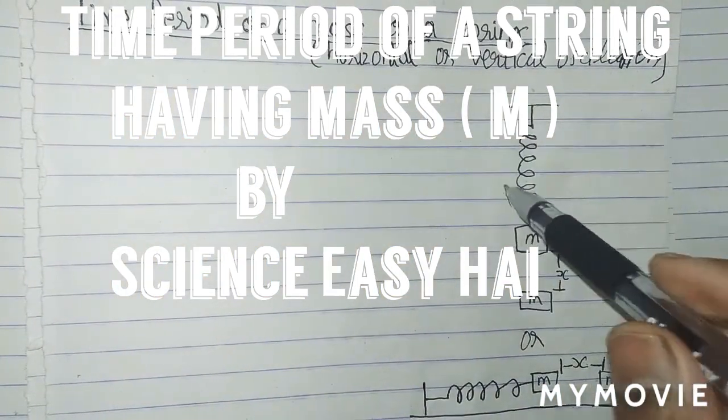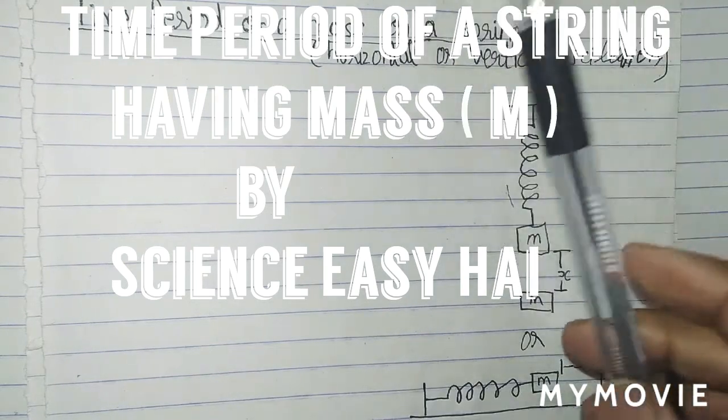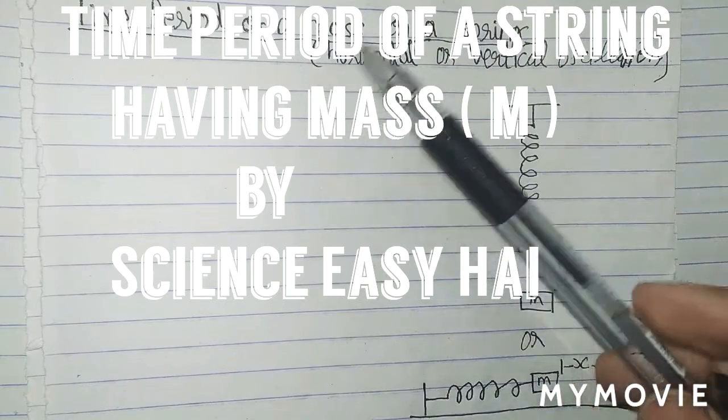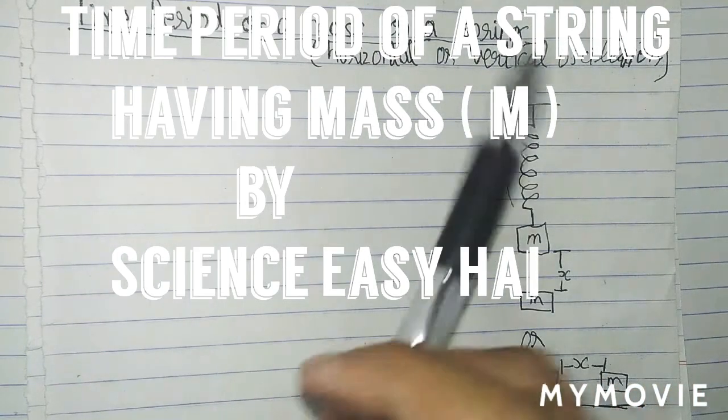You can see here the two figures in which one is describing the horizontal oscillation and another of vertical oscillation.